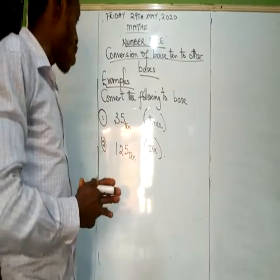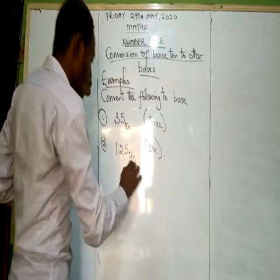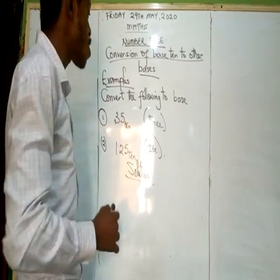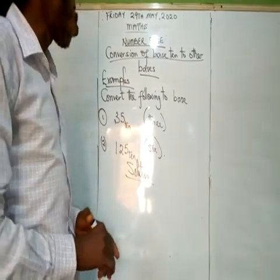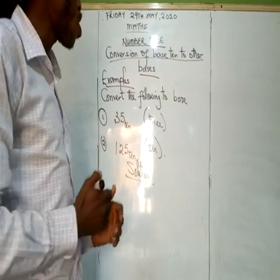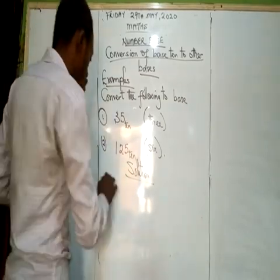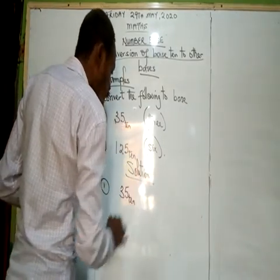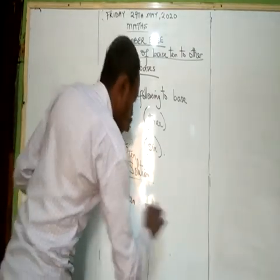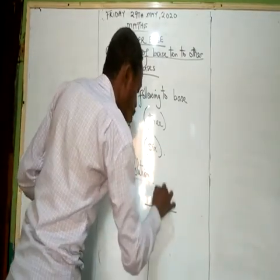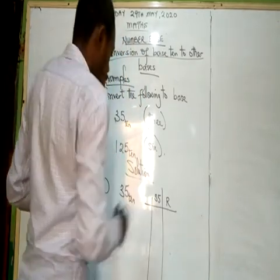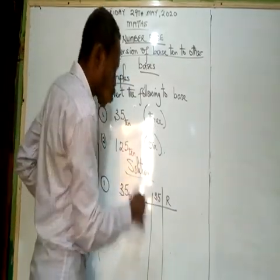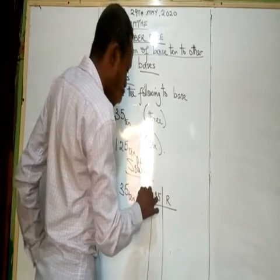Now let's look at these examples. Number one — like I said earlier, to convert from base 10 to other bases, you need to do continuous division. Let's convert 35 in base 10. This is what we do: you write 35, then you write your remainder, which is R, and you divide by the base you want to convert it into. You are converting to base 3, so you divide by 3.